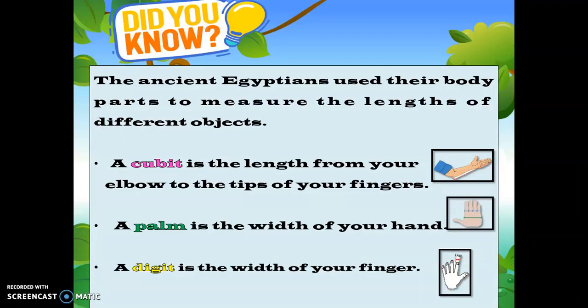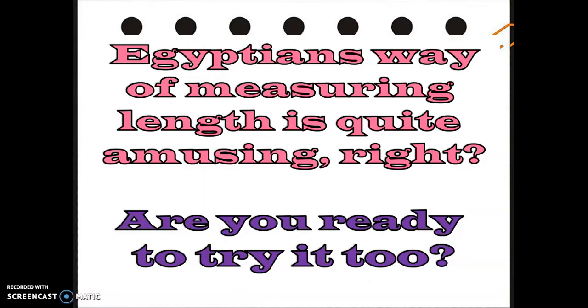You know that the ancient Egyptians used their body parts to measure the lengths of all different objects. A cubit is the length from your elbow to the tips of your fingers. A palm is the width of your hand, and a digit is the width of your finger. The Egyptians' way of measuring length is quite amusing, right?